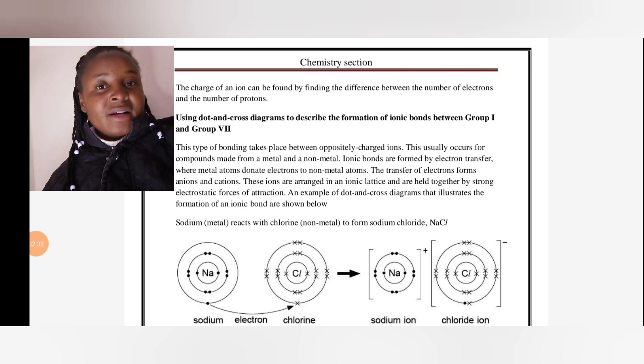The transfer of electrons forms anions and cations. If you receive electrons, you form anions; the one donating electrons becomes the cations. In this type of bonding, ions are arranged in an ionic lattice and are held together by strong electrostatic forces of attraction.